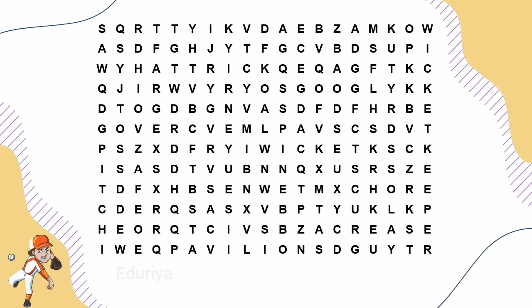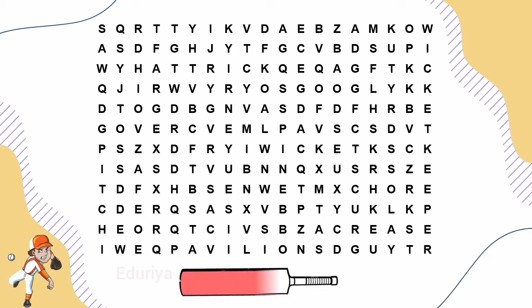Six consecutive legal deliveries bowled from one end of a cricket pitch to the player batting at the other end. The answer is Over.